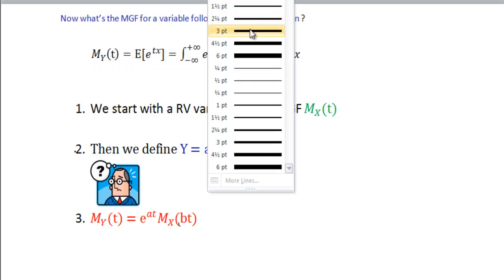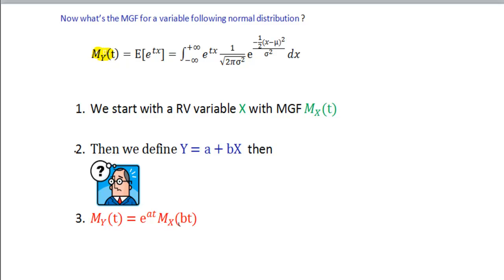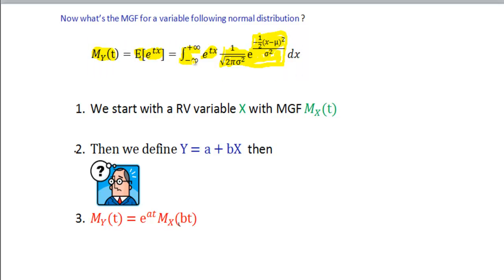The purpose of today's video is to derive a moment generating function for a normally distributed variable Y. To do so, we have to take the expectation of the function e^(tx) and multiply it by the probability density function of this normal variable, then evaluate the integral with respect to x. However, there is a far easier way to derive the moment generating function of the normal distribution.